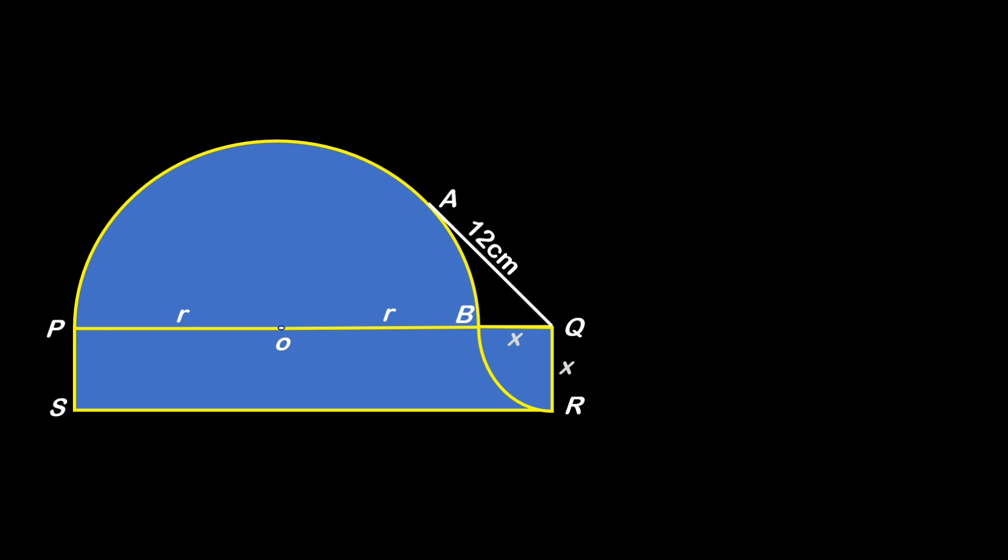So to find this area, let we draw a line segment from O to A which is actually the radial length r. Since at point A the radial length is perpendicular to the tangent line, the angle OAQ is a right angle.